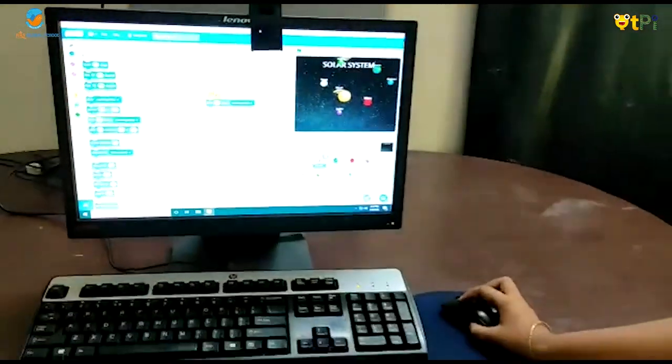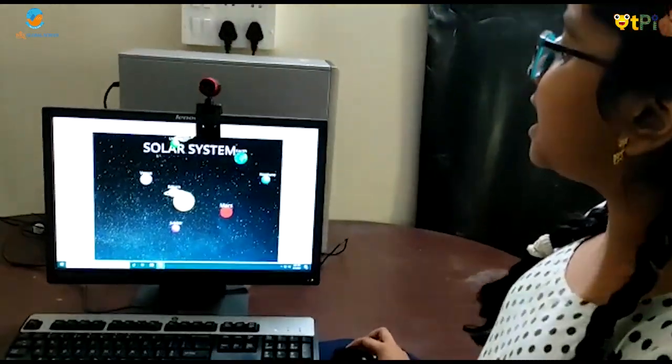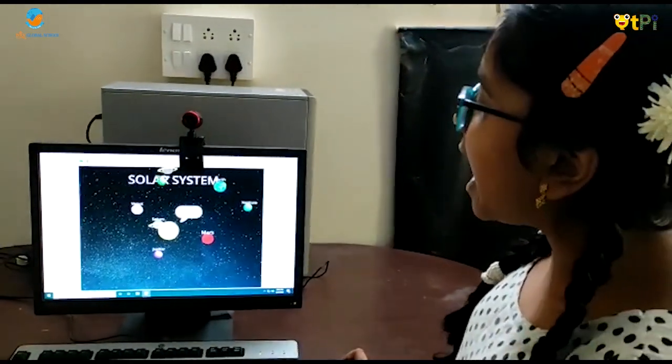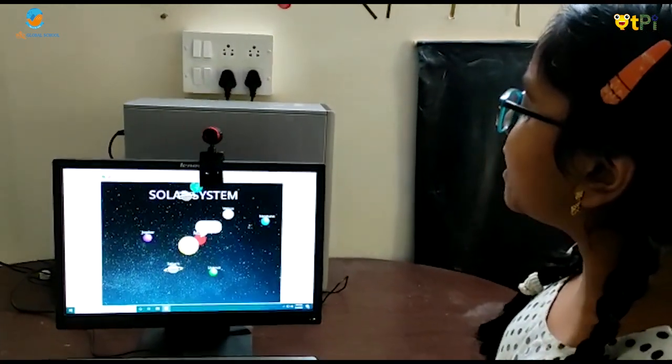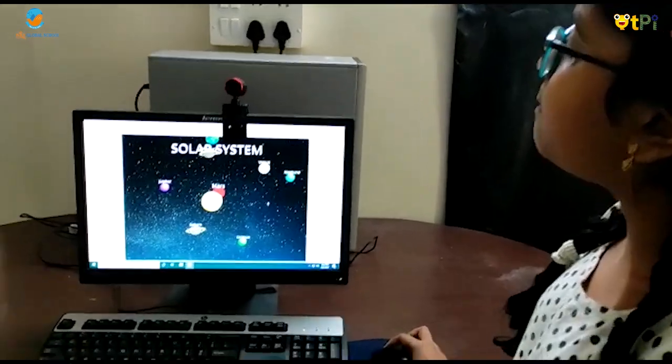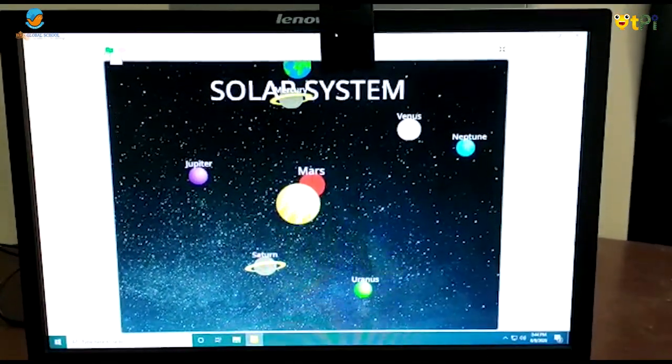Now I am going to play my Solar System. When I click the flag, the sun text is shown and the other planets will move to random position for 5 seconds.